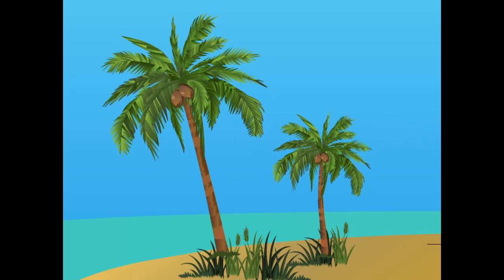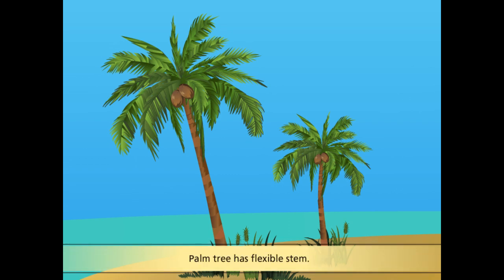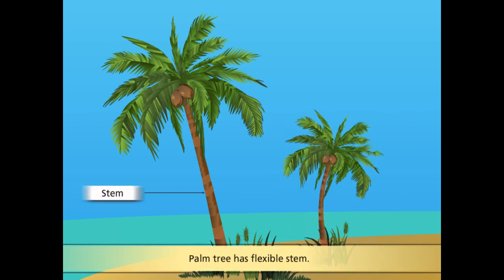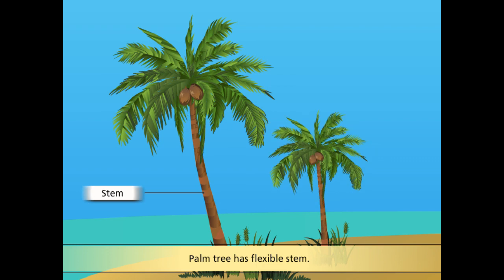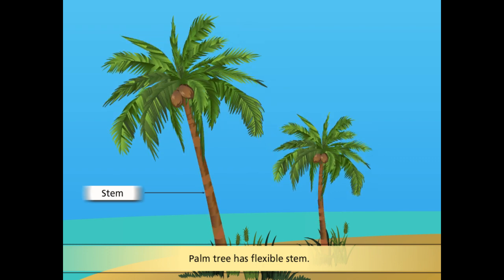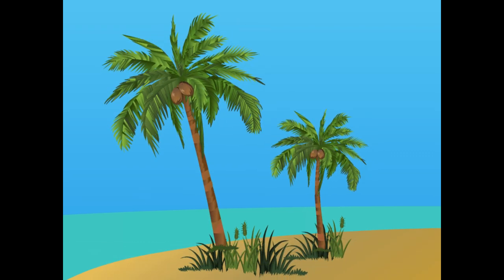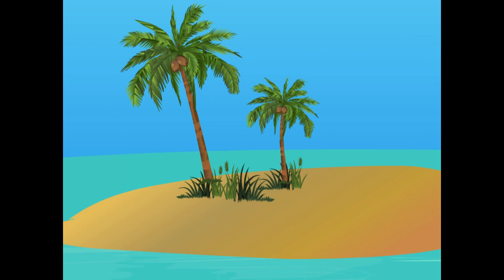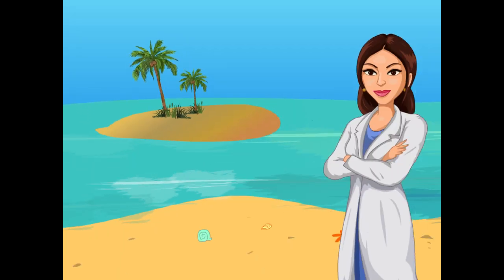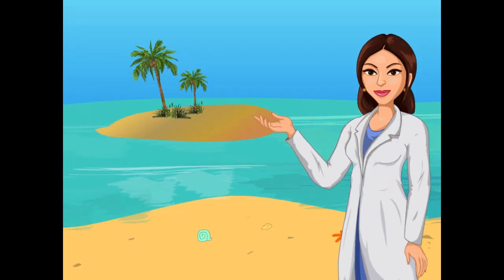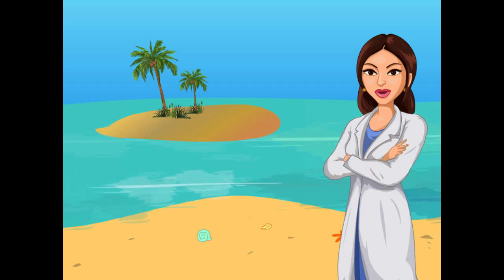You will be surprised to know that these plants have a flexible stem. When storms occur, the stems bend and when the storm is over, they become erect again. Coconut trees have long roots that go deep into the soil and firmly anchor the plant. So, this is how the coconut tree survives easily in coastal regions.